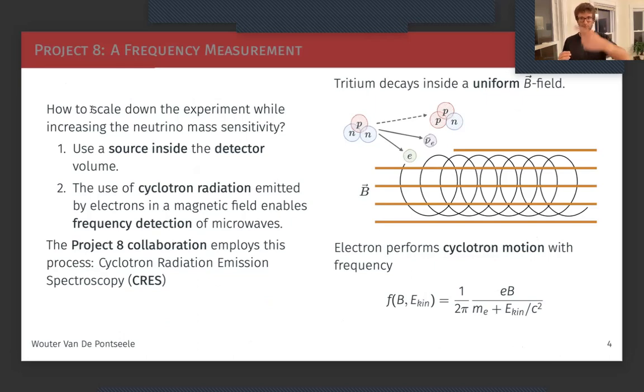In this magnetic field it will perform cyclotron radiation motion, so it will emit microwave radiation which can be measured. The formula on the bottom right shows that the energy of the electron is linked to this frequency. Project 8 employs this process called cyclotron radiation emission spectroscopy (CRES) to find out what the neutrino mass is.